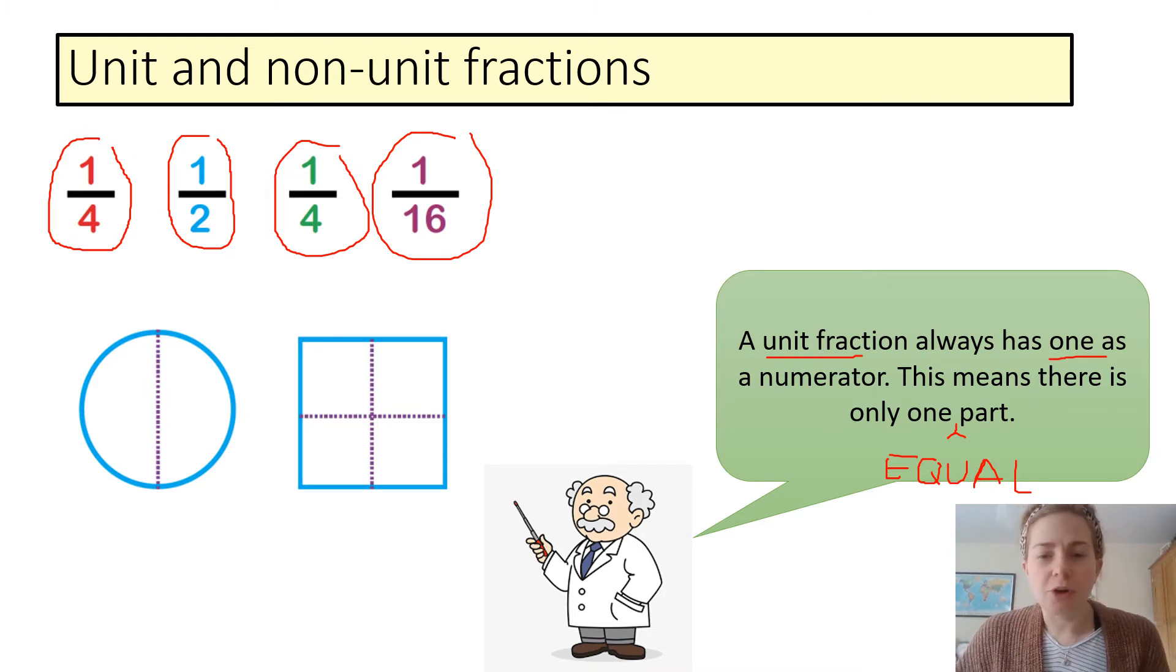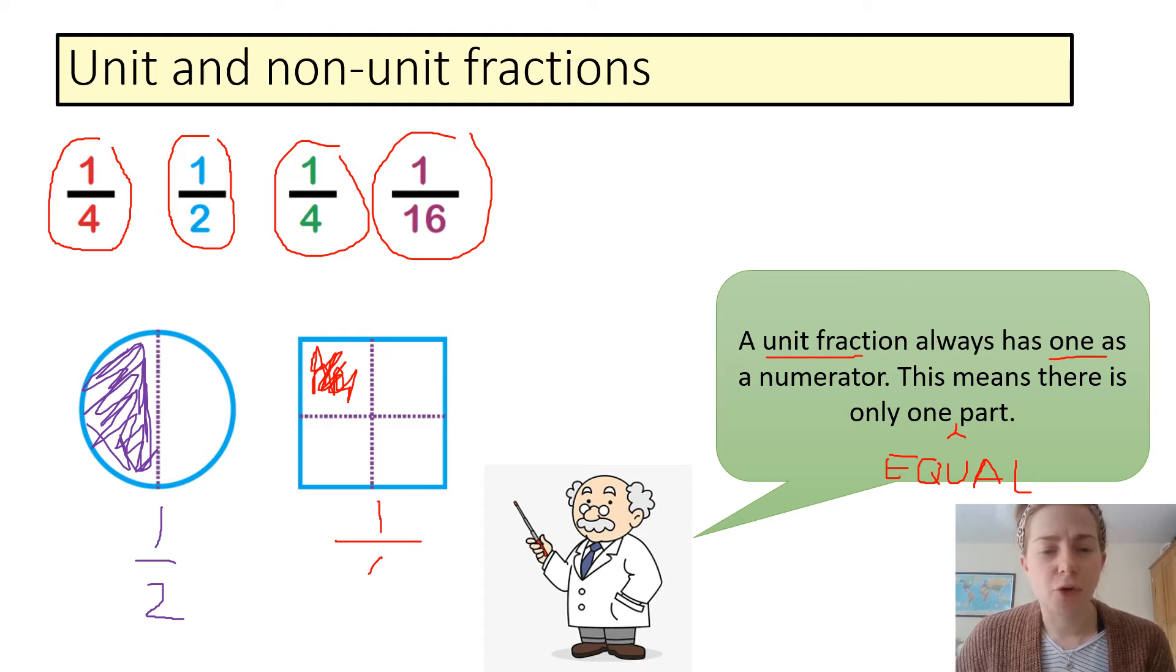So, I can show you one half on my circle by colouring in one half. So, I have one out of two parts. And on my square, it's been divided into four. So, I need to colour in one for my one part, which is my numerator. And then four is my denominator, because I have one, two, three, four parts. Equal parts.